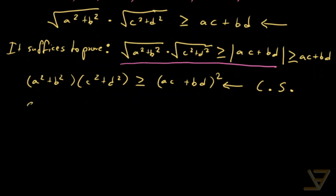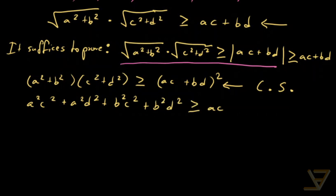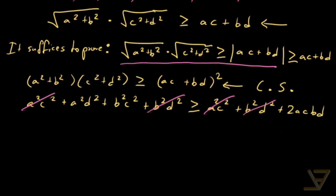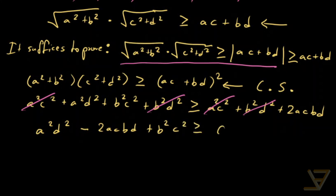By expansion, we get a²c² + a²d² + b²c² + b²d² ≥ a²c² + b²d² + 2acbd. The a²c² and b²d² terms cancel from both sides. Taking everything to the left side, we get a²d² − 2acbd + b²c² ≥ 0.